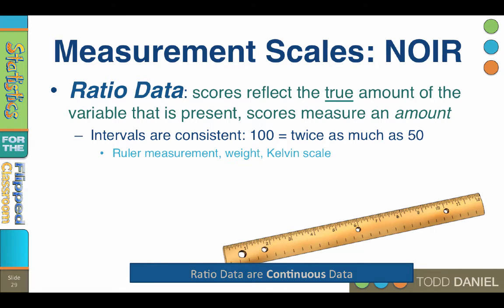100 is twice as much as 50. Examples of ratio data would include ruler measurements, weight in pounds or kilograms, amounts of money, or the Kelvin scale of temperature.